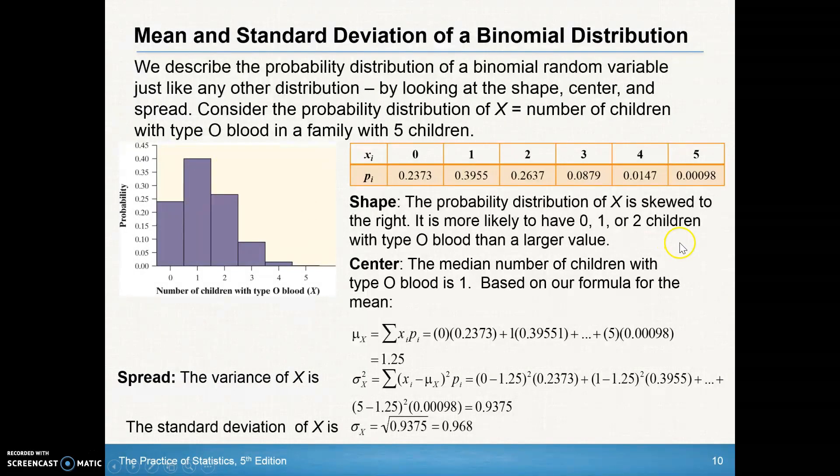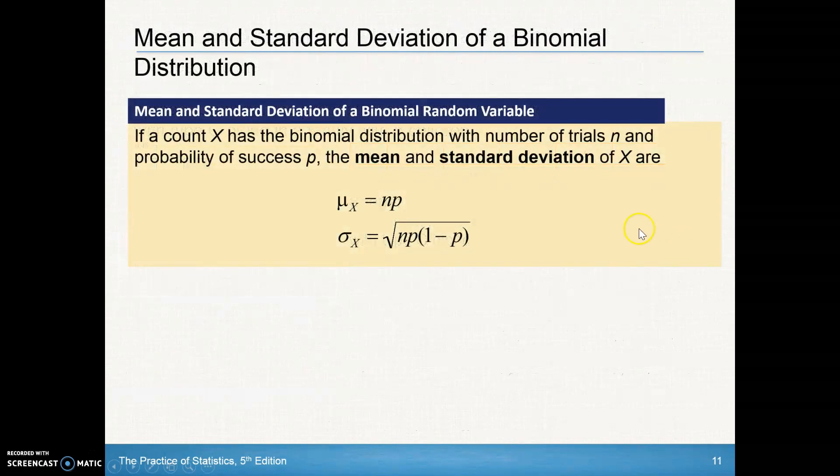There has been some work by prior mathematicians to come up with shortcuts. A real fast way to find the mean is essentially take n times p. In our previous problem, n was 5. The mean of our x's, there were five children times the probability of having type O blood, 0.25, and that was 1.25. The standard deviation of that x random variable is the square root of n times p times (1-p), so 5 times 0.25 times 0.75, and when you do this, this comes out to be 0.968, as we got on the previous screen.